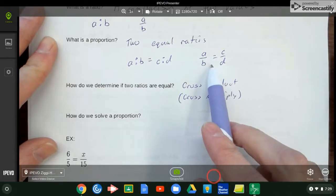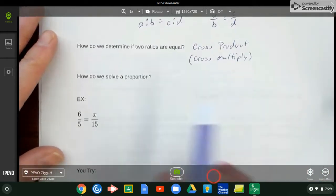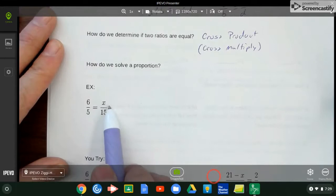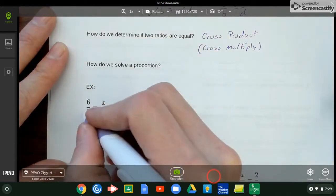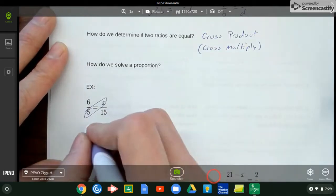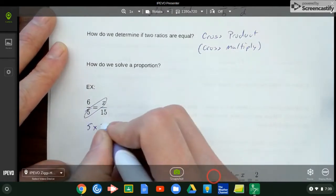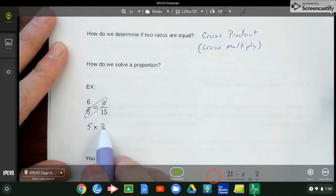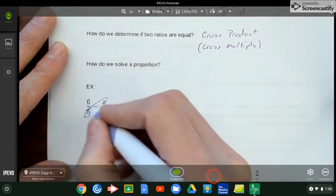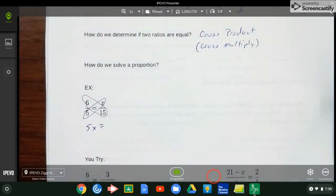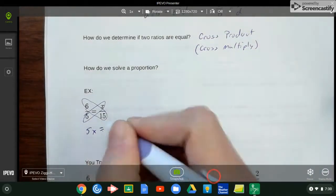Here's a proportion. I don't know what the x is, but I think these are going to be equal, so I use my cross product. Five times x is 5x equals - don't lose the equal sign, I see a lot of people doing that - 6 times 15. I need to go to my calculator here for that. 6 times 15 is 90.